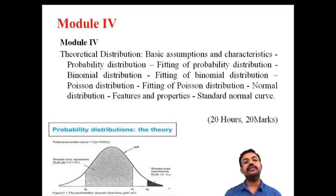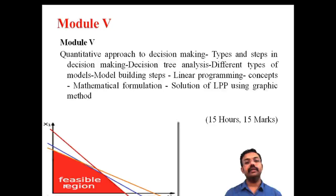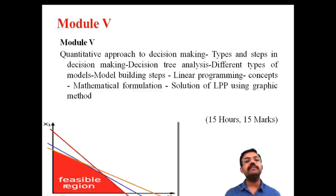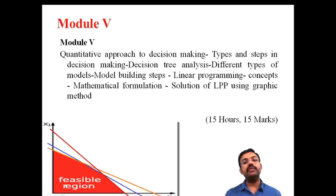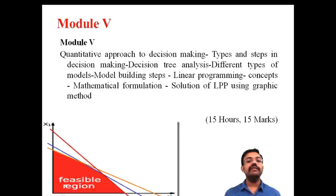The fifth and last module relates to Decision Making and Linear Programming. Topics include the decision-making process, types and steps in decision making, decision tree analysis, and Linear Programming Problems (LPP) — formulation and solutions. This module has 15 hours and carries 15 marks.